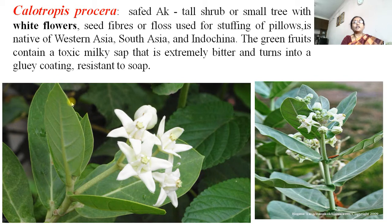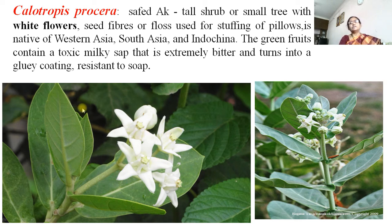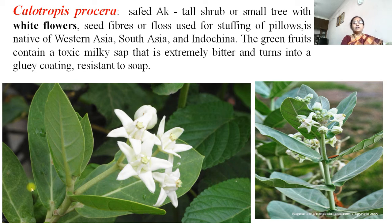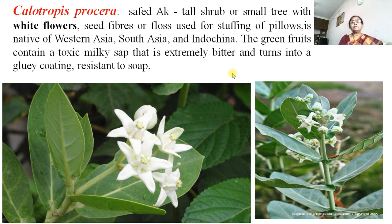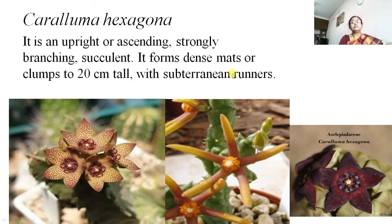Another plant is Calotropis procera — also a Calotropis plant but having white flowers. It is also a shrub used medicinally because milky latex is present. When we break the leaf or any part of the plant we get milky latex, which is very important and can be used in medicine; that is why this plant is cultivated as a medicinal plant.